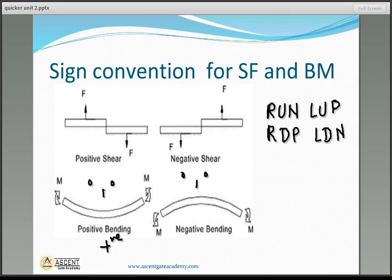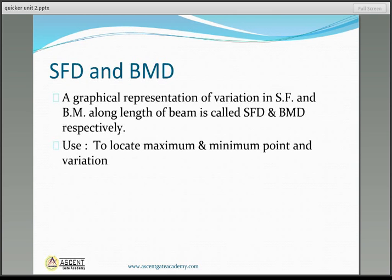When we have a hogging beam — like a crying face — we take the bending moment sign as negative. These are the sign conventions for shear force and bending moment.